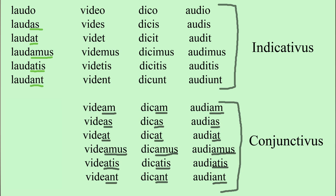For audire, the present tense indicative is: audio, audis, audit, audimus, auditis, audiunt. And the modus coniunctivus — the subjunctive — is: audiam, audias, audiat, audiamus, audiatis, audiant. That means: so that I may hear, so that you may hear, that he may hear, that we may hear, that you all may hear, that they may hear. It can also express 'let us hear': audiamus means 'let us hear,' or videamus means 'let us see.'